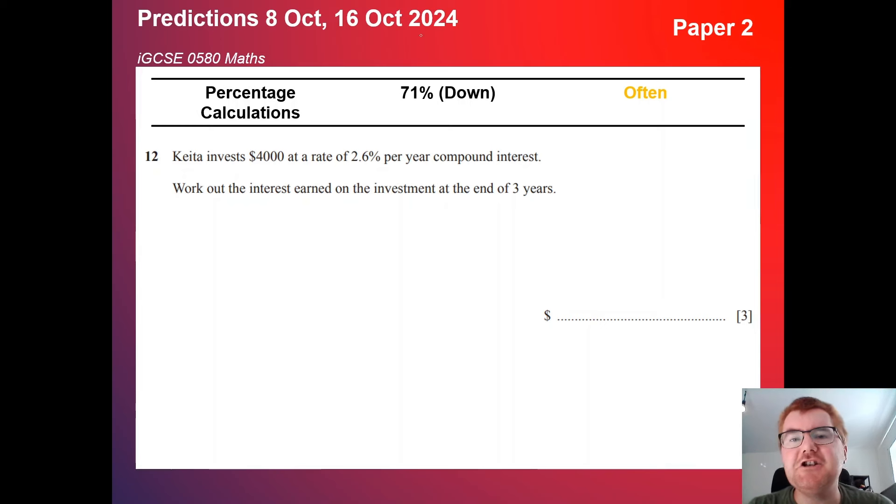On to percentage calculations, a little bit down here at 71%. This is a very typical question. $4,000 with a rate of compound interest. One thing that's happened in a very recent paper is they put in a simple interest question to really make sure you know the difference between simple and compound interest. If you find that a topic you struggle with, then do check out the video above with all of IGCSE percentages going through those two key words.